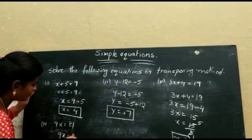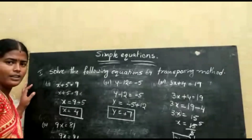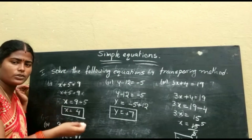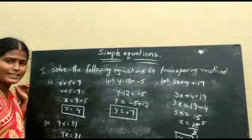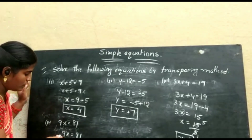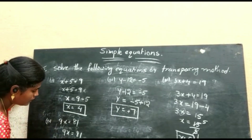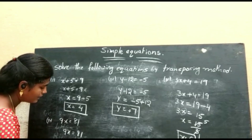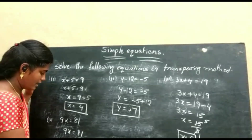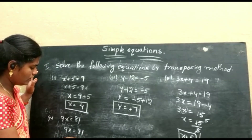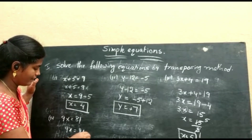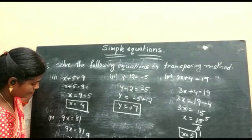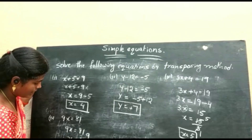So x is equal to 5. Fourth one, given equation: 9x is equal to 81. Transposing 9 to the RHS as division, x is equal to 81 divided by 9. Since 9 times 9 is 81, x is equal to 9.